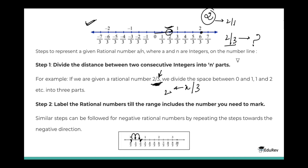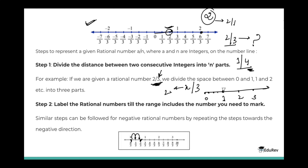Let's take another example. Suppose I need to represent 1/4. I'll draw a number line and divide the distance between 0 and 1, 1 and 2, 2 and 3, and so on — and on the left-hand side as well — into four parts, because the denominator is 4. So I divide into four parts: first, second, third, and fourth. I need to represent the first of the four parts, which is the number 1/4.